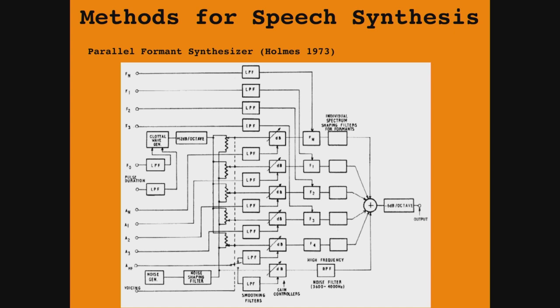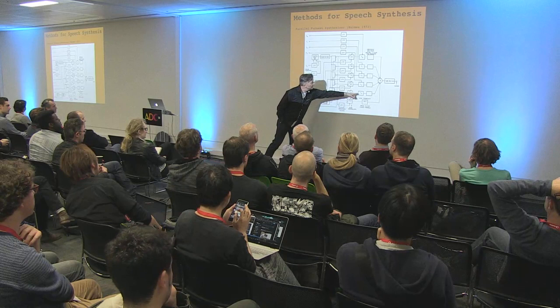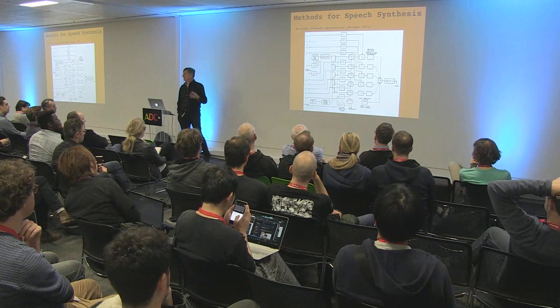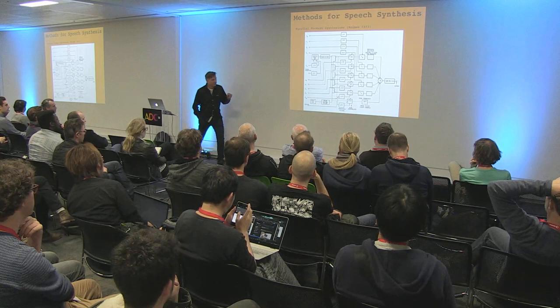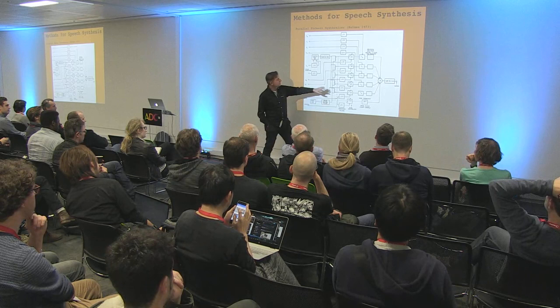This is a diagram of the parallel formant synthesizer by John Holmes in 1973. There are three formants, nasal anti-formants, and control voltages — this is all analog with potentiometers. Interestingly there's a fourth formant that doesn't change in frequency, only in amplitude — it just makes the speech sound a little bit more natural. For understanding speech, three formants are roughly enough.